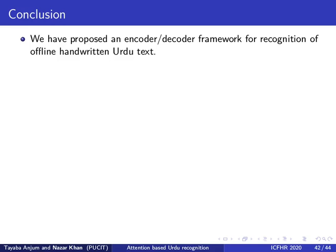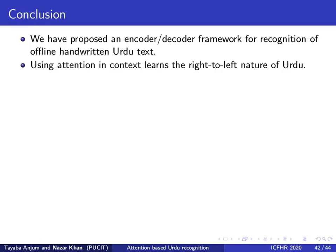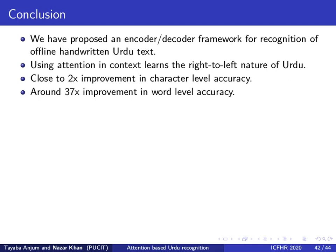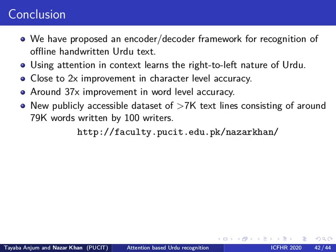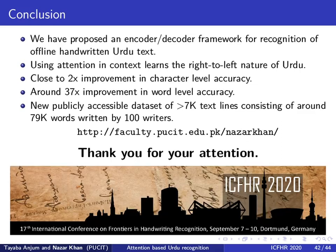To conclude, we have proposed an encoder-decoder framework for recognition of offline handwritten Urdu text. We have shown that using attention in context learns the right-to-left nature of Urdu. We show close to 2 times improvement in character level accuracy and around 37 times improvement in word level accuracy. We introduce a new, publicly accessible dataset of more than 7,000 text lines consisting of around 79,000 words written by 100 writers, available at the link shown. Thank you for your attention.